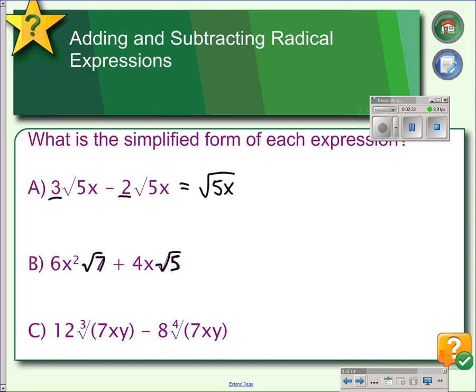Next example, we have 7xy in both cases. So, you would think you can combine them, but the indices are not matching. We have a 3 and a 4. Since they don't match, again, this does not combine. So, it's simplified in the form that it's in already.